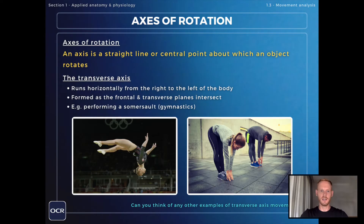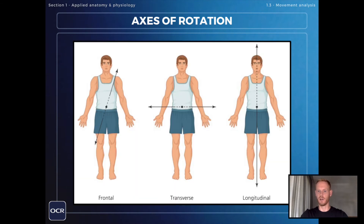Next, the transverse axis runs horizontally from the right to the left of the body, and rotations around this axis are forwards and backwards. For example, a gymnast rotates around the transverse axis when performing a somersault. The image in the middle of the diagram demonstrates the transverse axis running from left to right of the body.